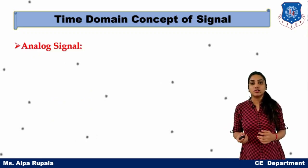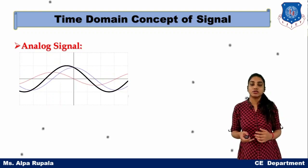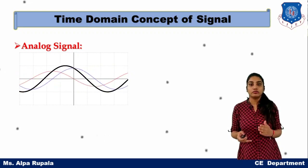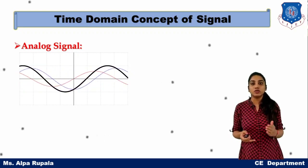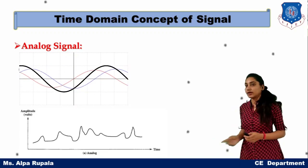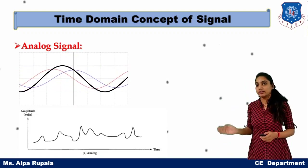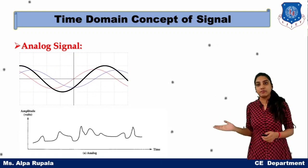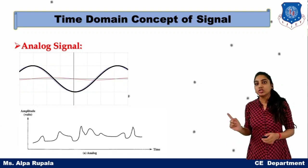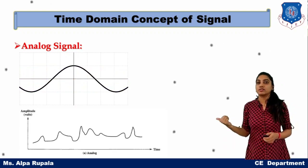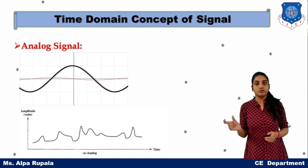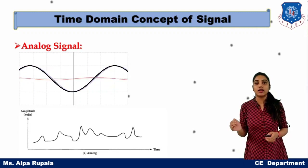Analog signals are a kind of signal which is continuous. If we want to calculate the value of the strength of the signal, it will be continuous according to time. In the diagram, the y-axis represents amplitude and the x-axis represents time. At any particular time, the signal strength is in a continuous form, and between two minimum time intervals the amplitude value cannot vary in a large range.